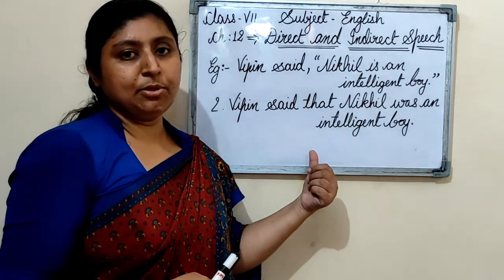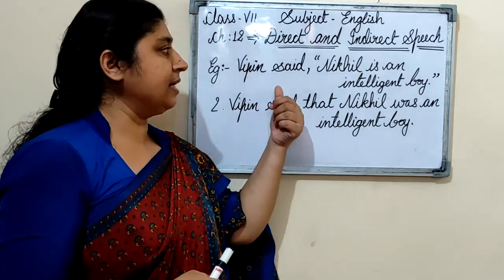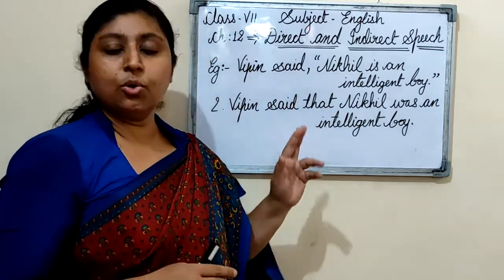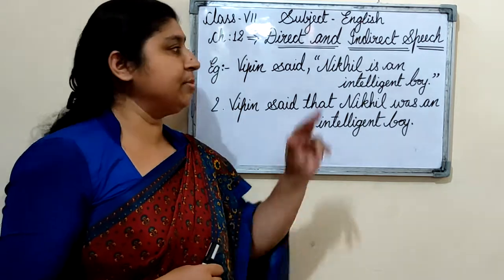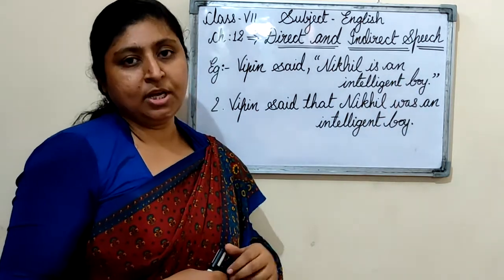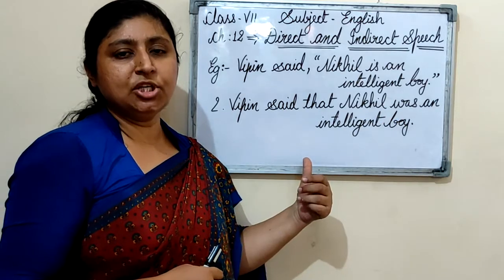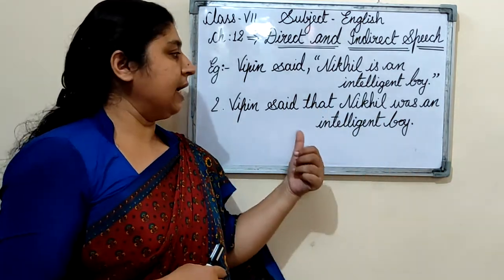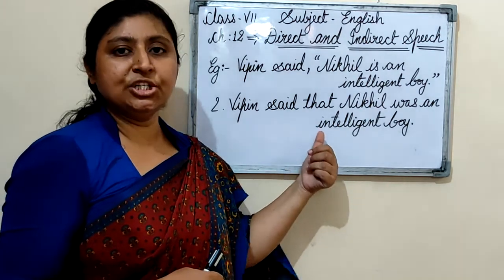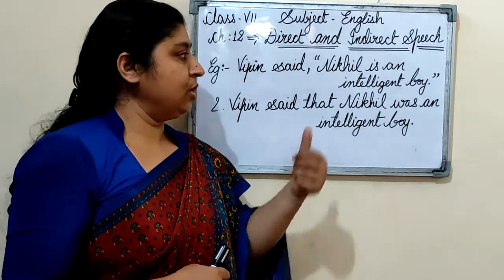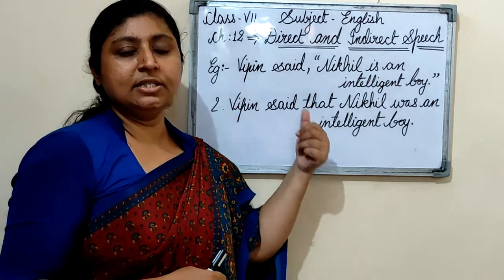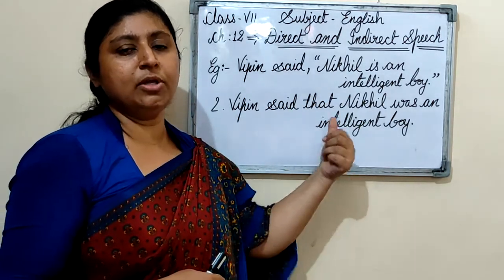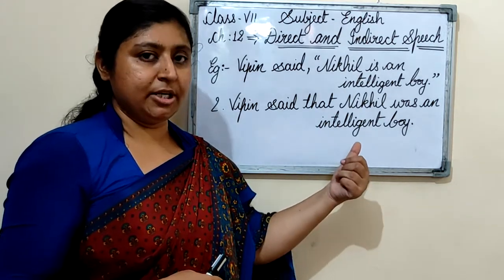Now let's look at the rules for direct and indirect speech. In direct speech, the exact words of the speaker are protected inside inverted commas. But in indirect speech, inverted commas are not used. In indirect speech, the conjunction word 'that' is used. These are some rules we must keep in mind when changing from direct speech to indirect speech.